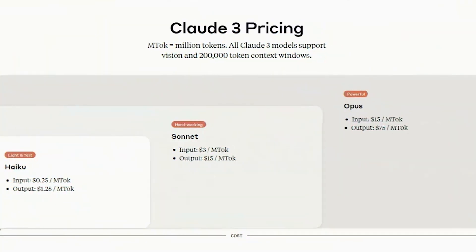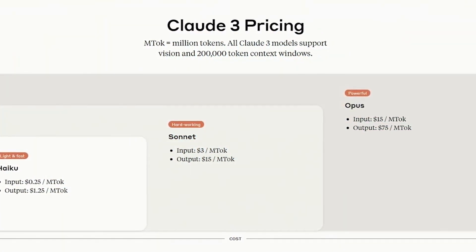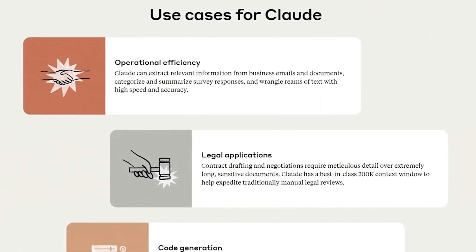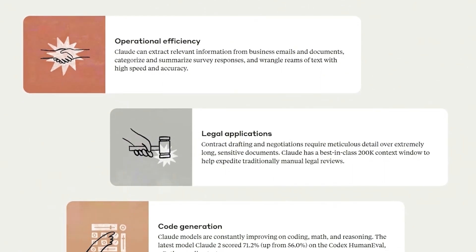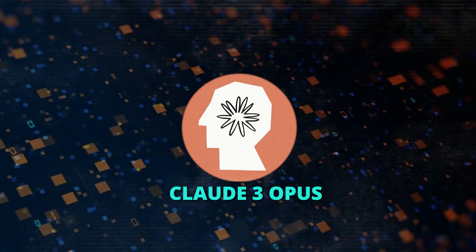CLOT3 is the latest generation of artificial intelligence models developed by Anthropic, a leading company in the field of AI. This new generation sets new industry benchmarks across a wide range of tasks. The CLOT3 model family includes three state-of-the-art models: CLOT3 Haiku, CLOT3 Sonnet, and CLOT3 Opus.